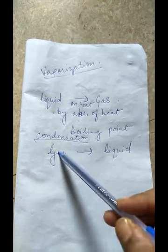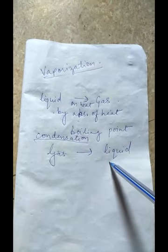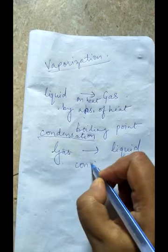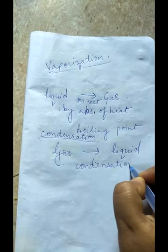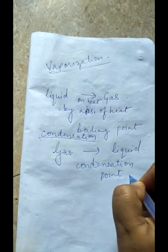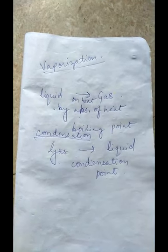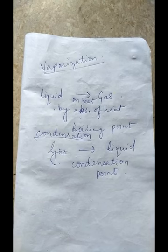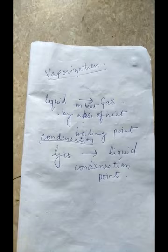Condensation is the change from vapor or gaseous state to liquid state at a constant temperature by rejecting heat — that is, by cooling or decreasing temperature. It is known as condensation, and the particular temperature at which this change occurs is known as the condensation point. For example, steam condenses into water at 100°C.